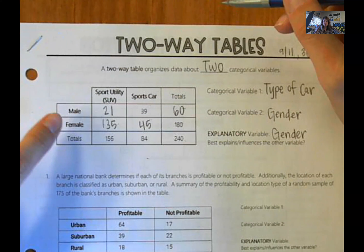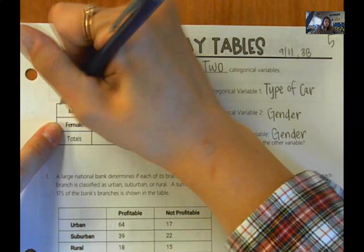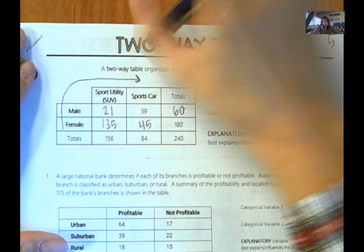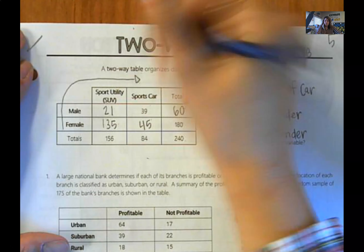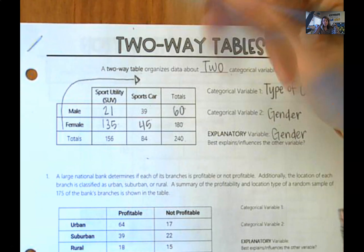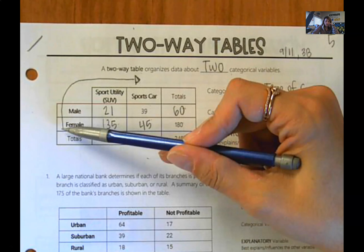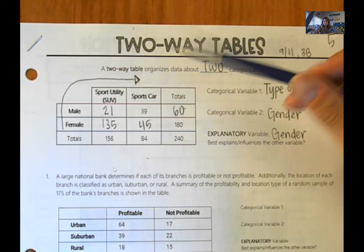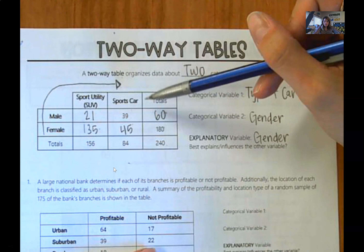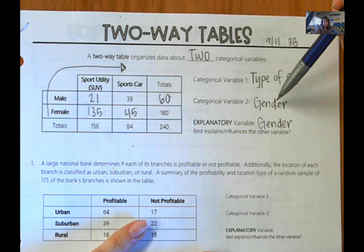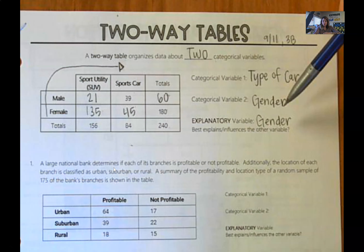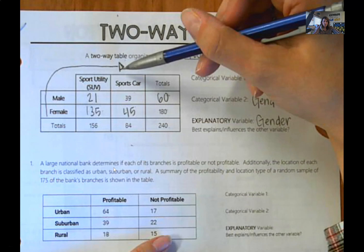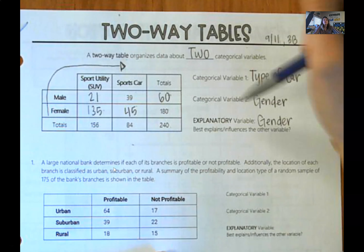To show that we understand the relationship, we get in the practice of drawing an arrow as a visual representation. We think gender is going to influence the type of car, so we draw an arrow starting at gender and wrapping around to type of car. In a future video, this arrow is going to help us quite a bit in making a graph from this information. We start at the explanatory variable and draw the arrow to the variable we think it influences.